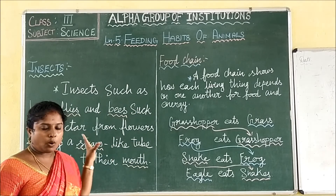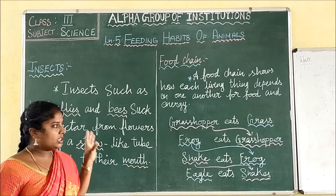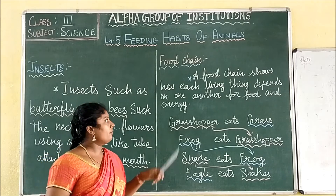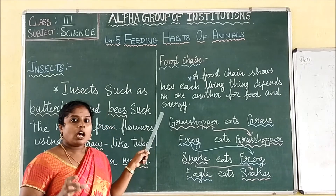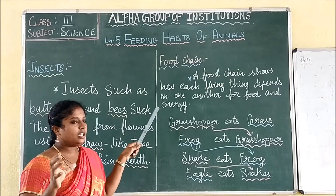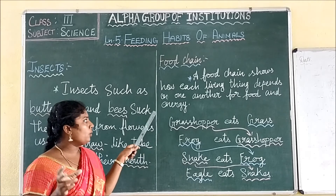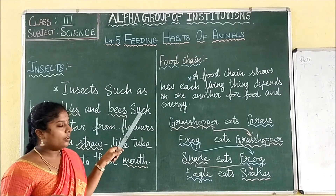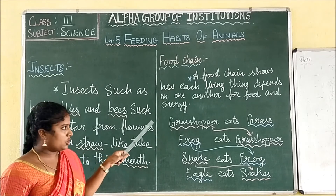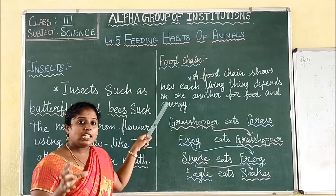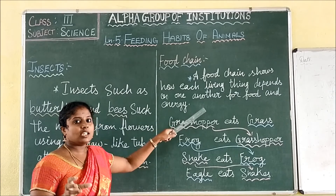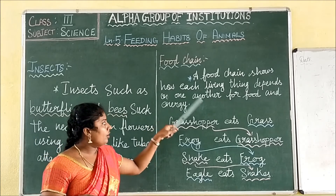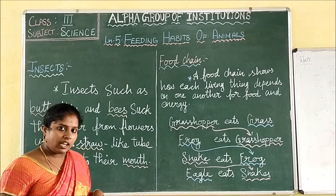Next, about food chains. So combining all together — what we have discussed — food chain. What is a food chain? A food chain shows how each living thing depends on one another for food and energy.